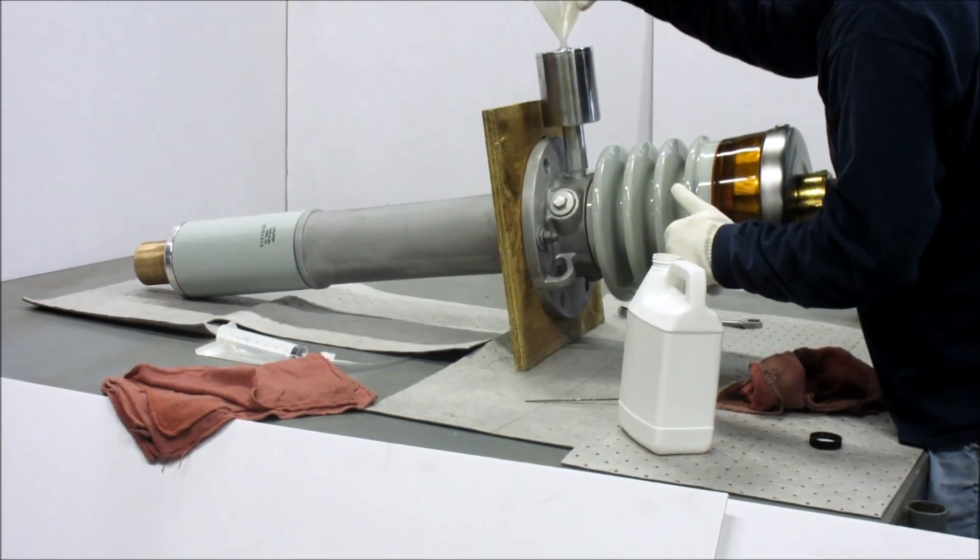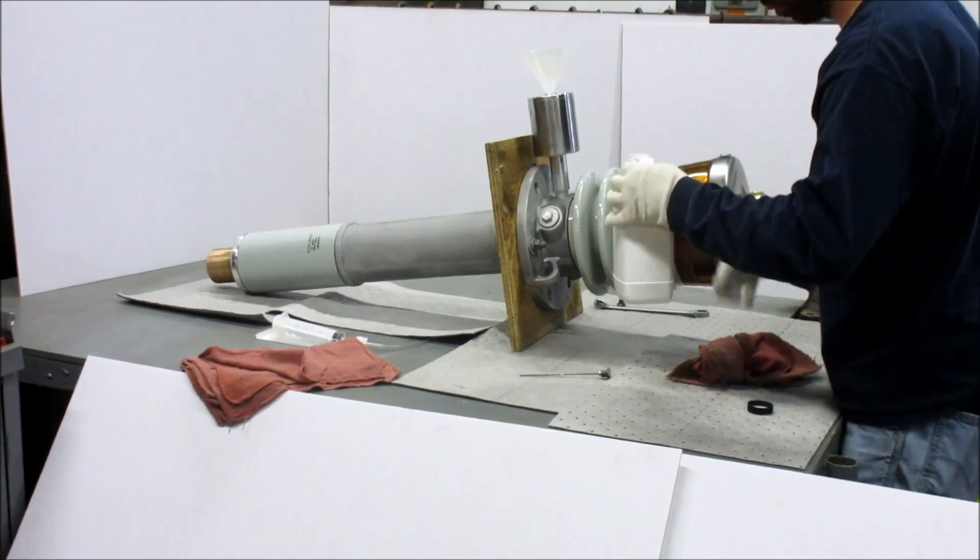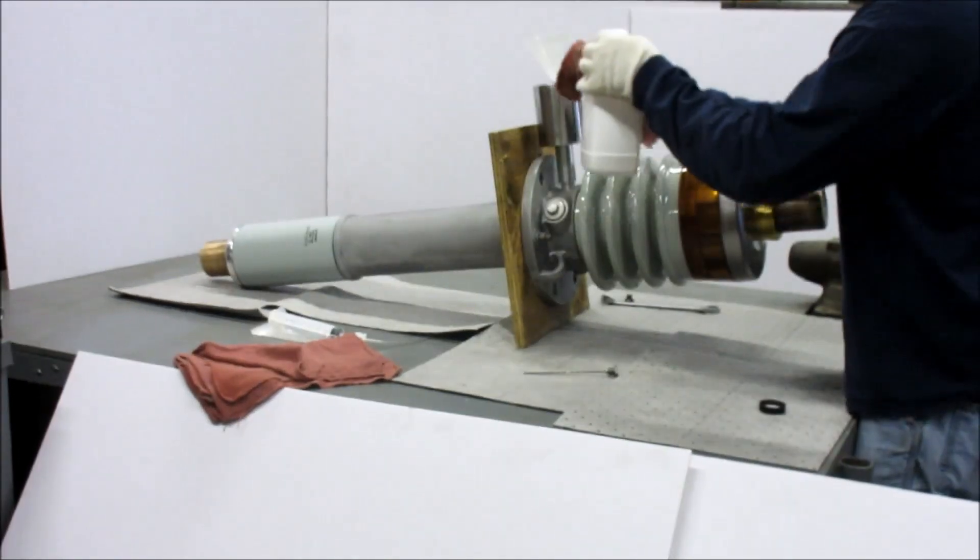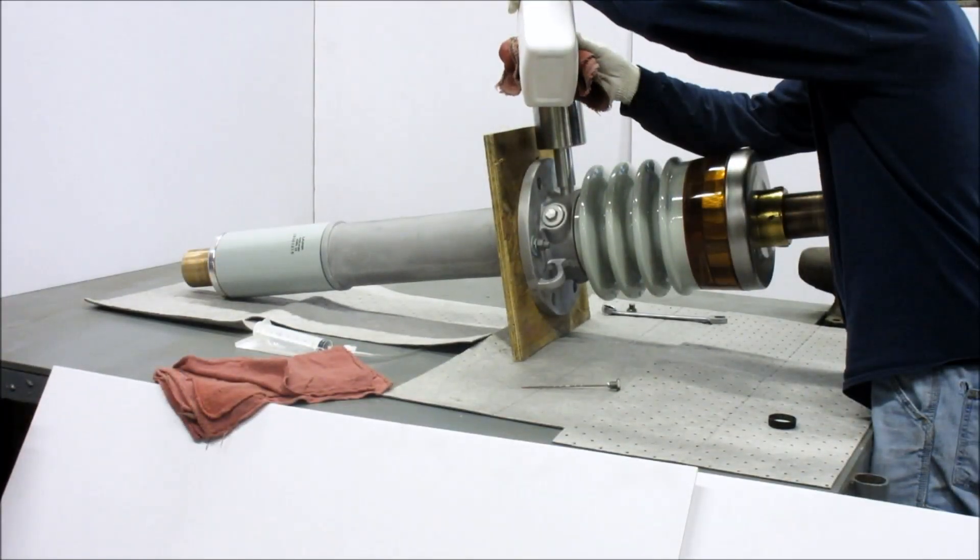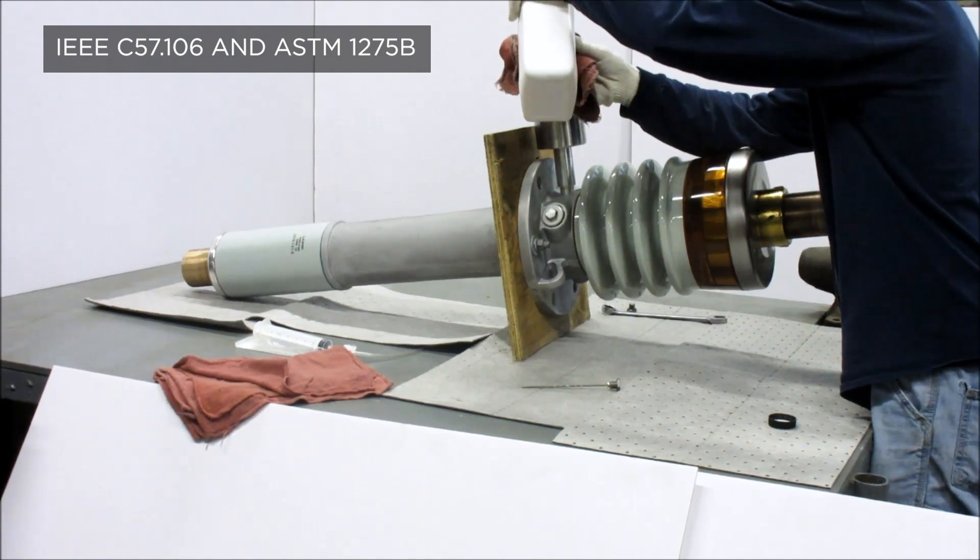Using a clean funnel, add oil to the reservoir. Use the extra oil supplied with the bushing or any non-PCB type 1 or type 2 transformer oil. The oil must meet the minimum requirements for new transformer oil per IEEE C57.106 and ASTM 1275B.